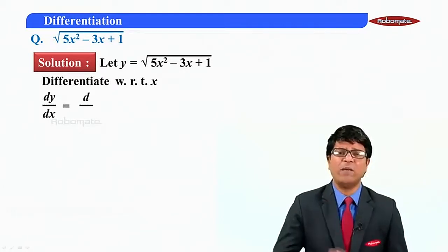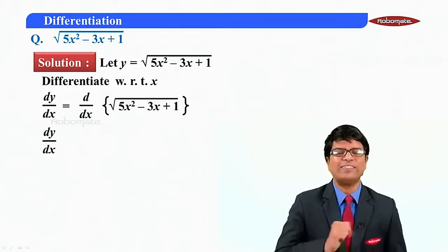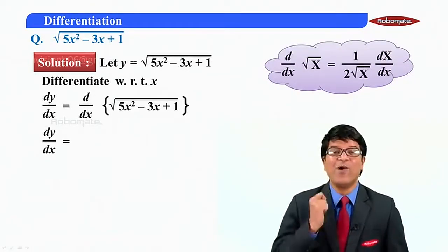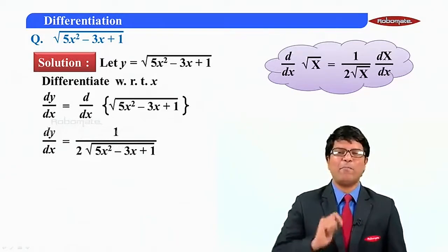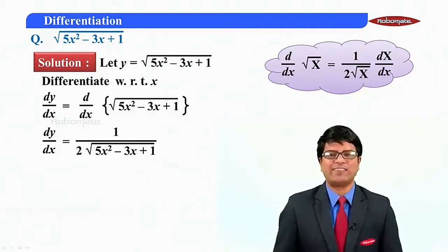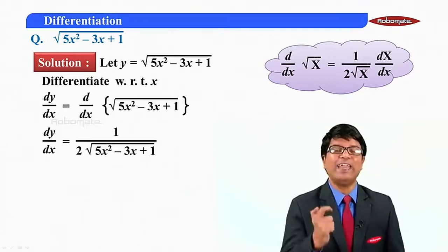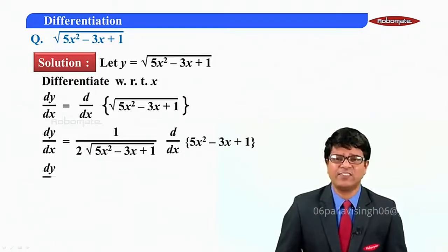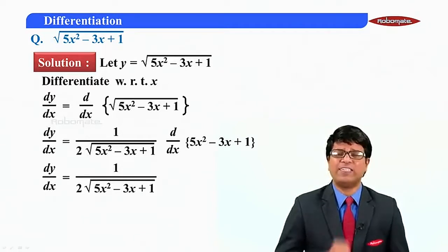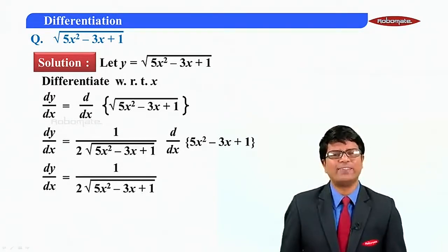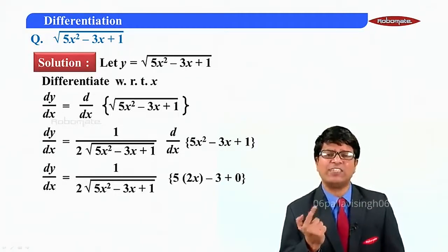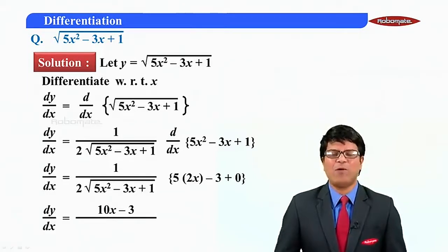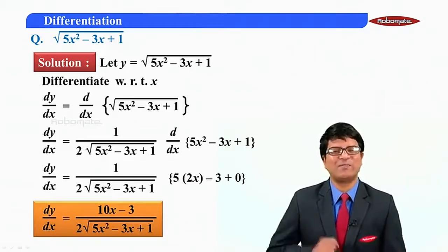Is it a standard or a composite? It is composite, to the standard form √x. The derivative of √x is 1/(2√x), so here it will be 1/(2√(5x² − 3x + 1)). What is replacing big x? It is 5x² − 3x + 1. Differentiating: d/dx of 5x² is 10x, d/dx of 3x is 3, and derivative of 1 is 0. So dy/dx = (10x − 3) / (2√(5x² − 3x + 1)).